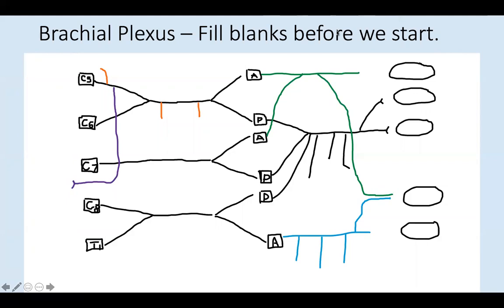Brachial plexus is extremely important when studying the neck. At the end of this workshop you should be able to fill in all the levels: root, trunk, division, cord, and branches. C5, C6, C7, C8, T1 form the roots. From the C5 root, the dorsal scapular nerve comes out. From C5, C6, C7 roots together, the long thoracic nerve arises.